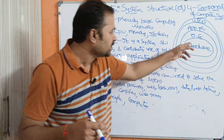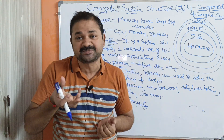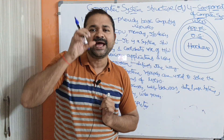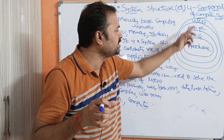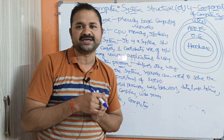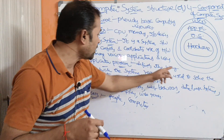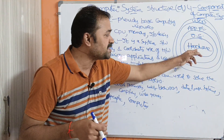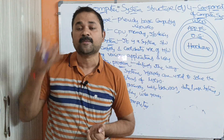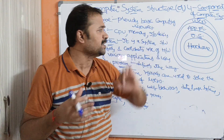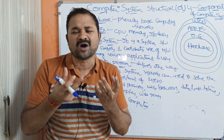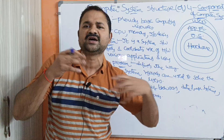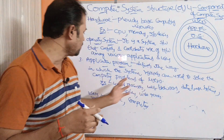An application program defines the way in which the system resources are used to solve the computing problems of the users. The operating system accepts the resources provided by the hardware and provides those resources to the application program, so that the application program can use them to solve the computing problems of the users.